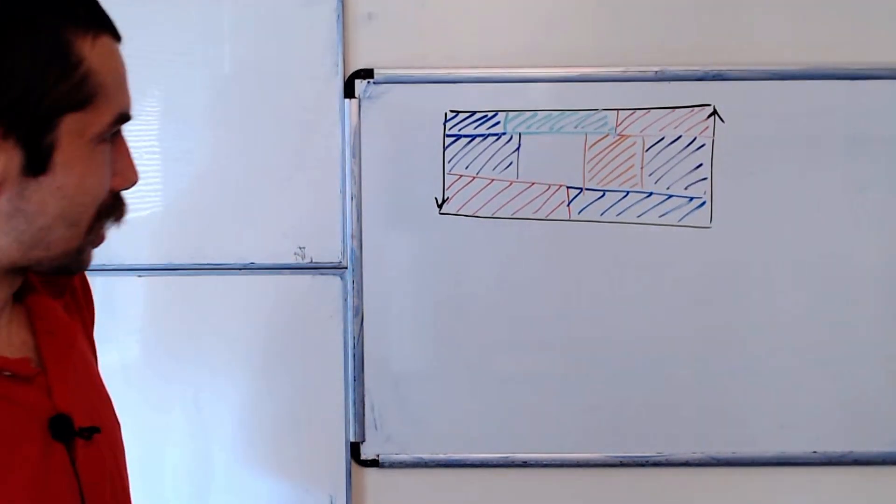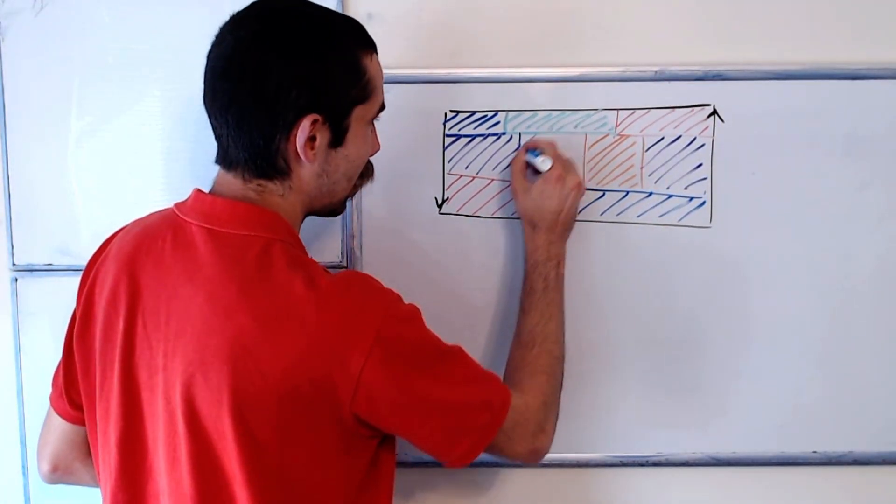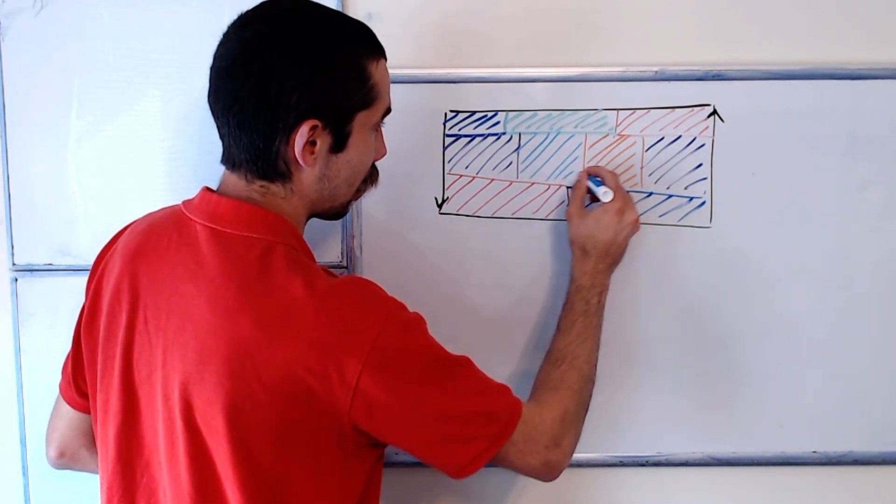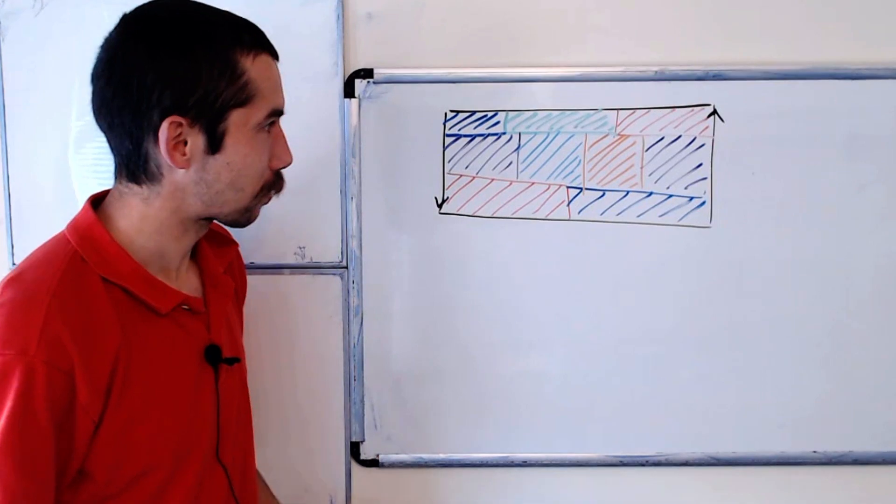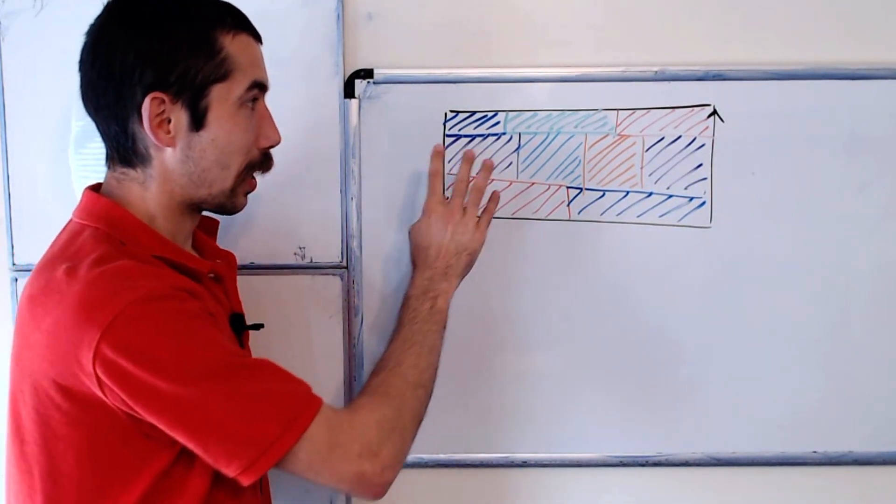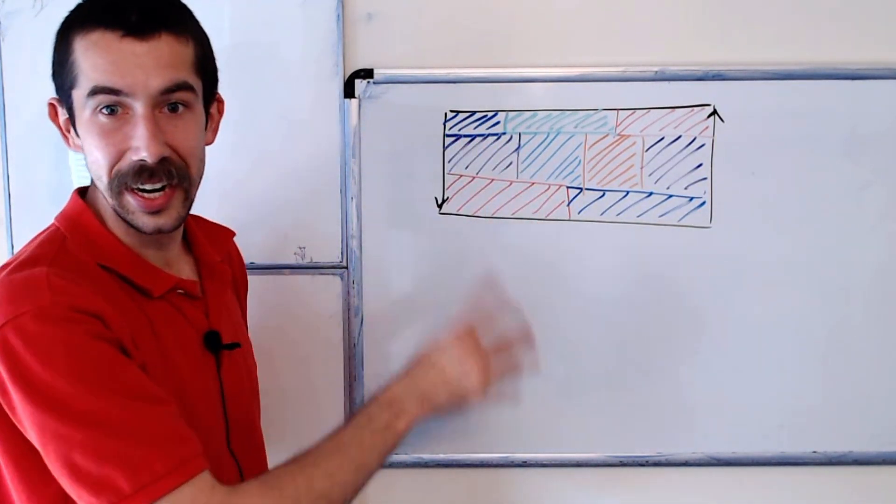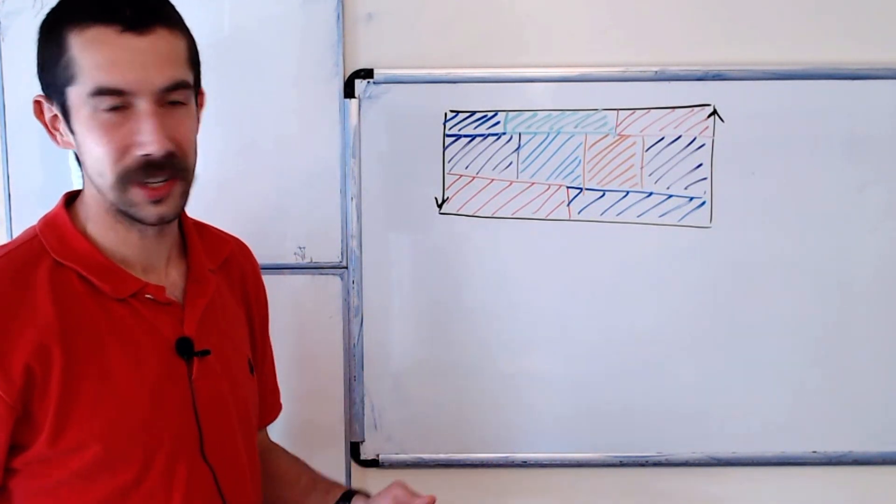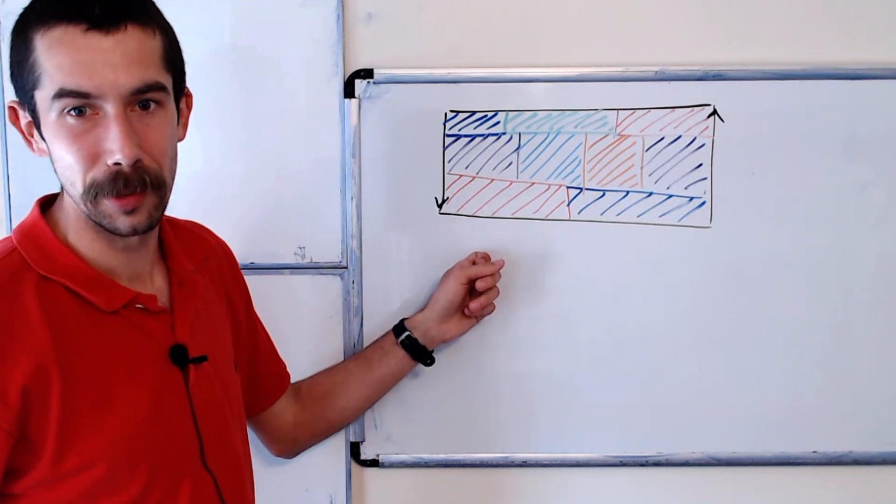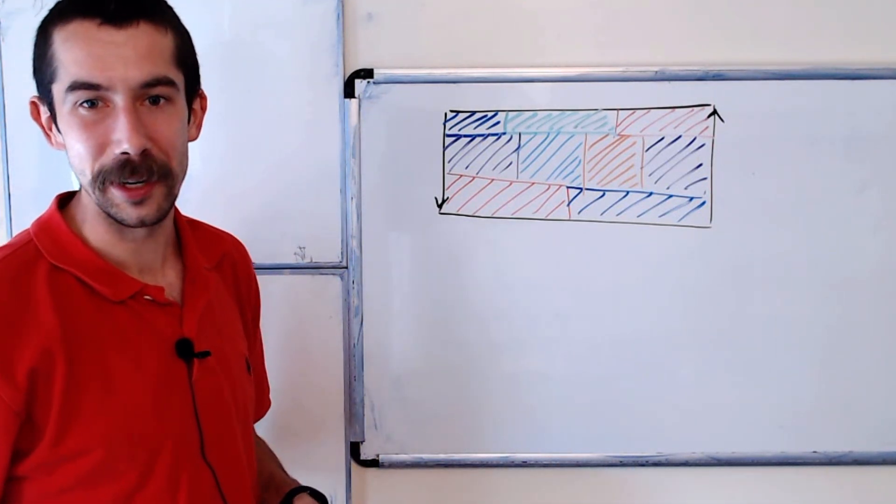And then last, we could do light blue in this region in the center. And you could see this light blue region is also neighbors with every other color. So here we have six regions, each of them neighbors with each other. So we have to have at least six colors. So the four-color theorem does not hold for Möbius bands.